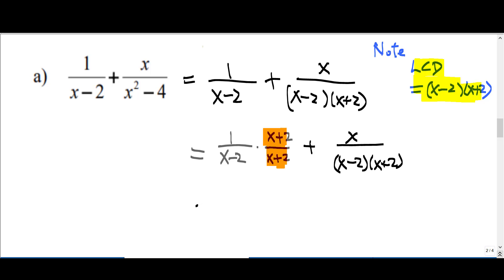So now you multiply. The first term becomes x plus 2. With the common denominator, you can add x now, over x minus 2 times x plus 2.